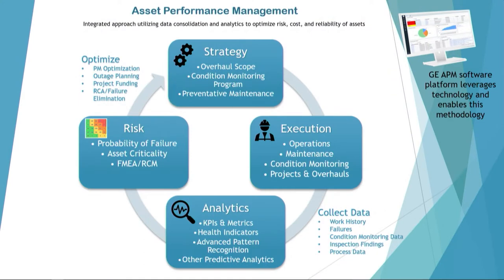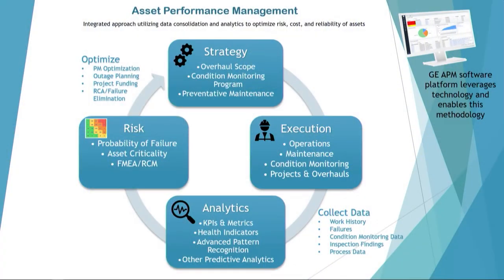This takes time to implement, especially if you don't have a lot of these foundations in place — if you haven't already done asset criticality, if you don't already have defined strategies. A big focus for Excel has been building these programs and this methodology while also implementing the digital transformation aspect at the same time. We leverage GE APM as our software application to help us do this, and we also have GE Smart Signal in our M&D center that we're utilizing.